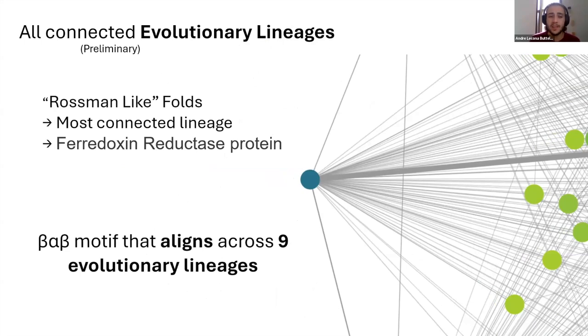This evolutionary lineage is the Rossmann-like folds. And it is, according to our preliminary results, the most connected evolutionary lineage. Specifically, it has one protein called ferridoxin reductase protein that contains a BAP motif that aligns across nine evolutionary lineages. So this means that one fragment here has enough statistically significant alignment to correlate to nine other different evolutionary groups. And that is very, very, very significant.